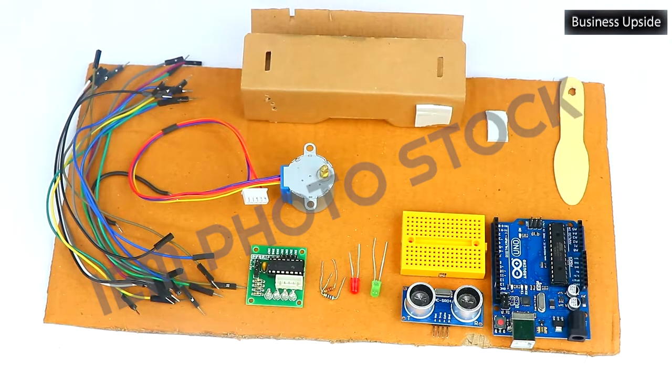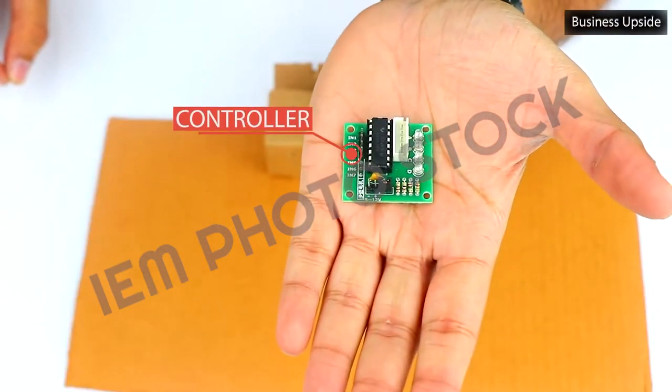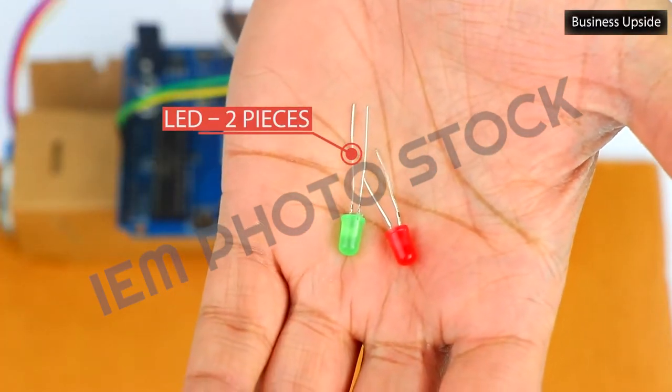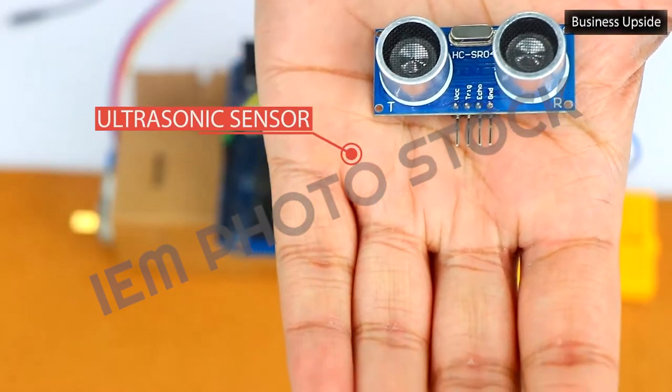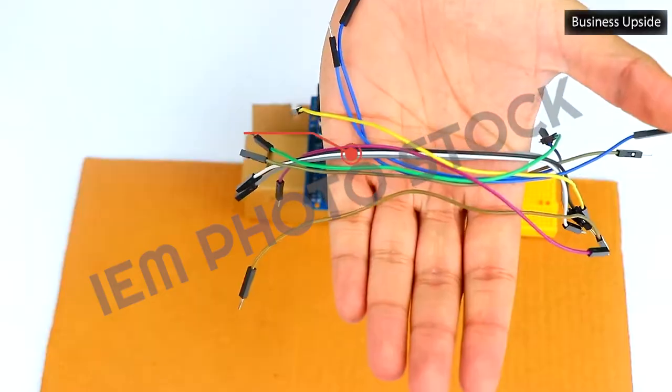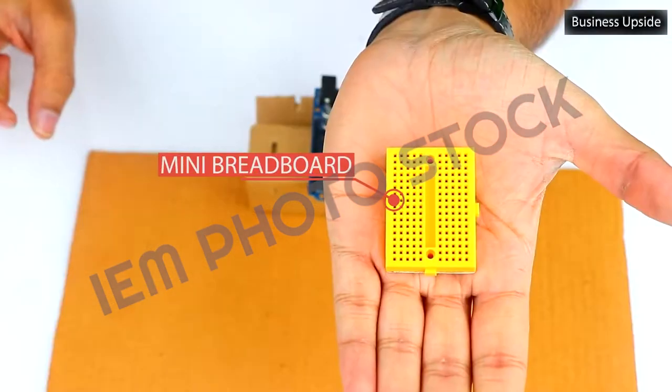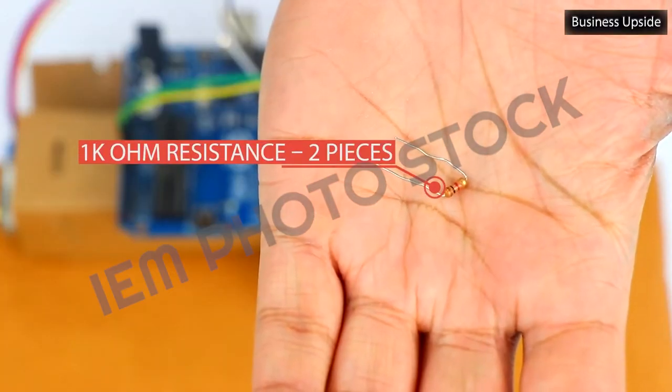To get started, you require a few components: Controller Arduino Uno, LED two pieces, Ultrasonic sensor, Servo SG90, Jumper wires, Double-sided tape, Cardboard box, Mini breadboard, 1K Ohm resistance two pieces, Wooden ice cream stick.